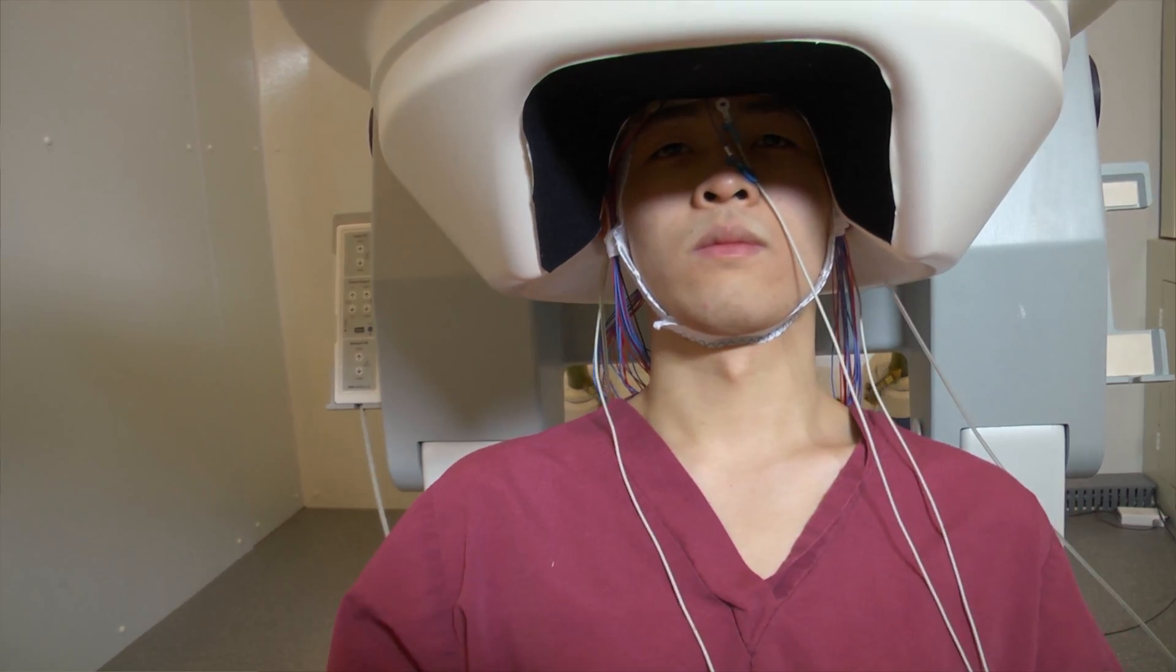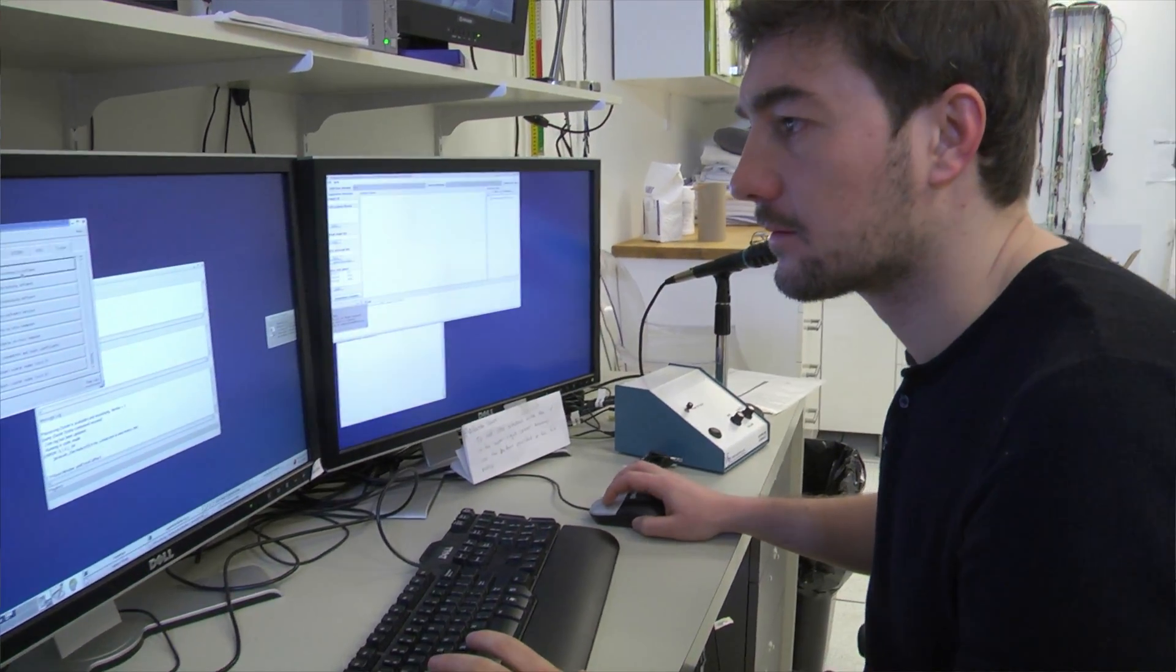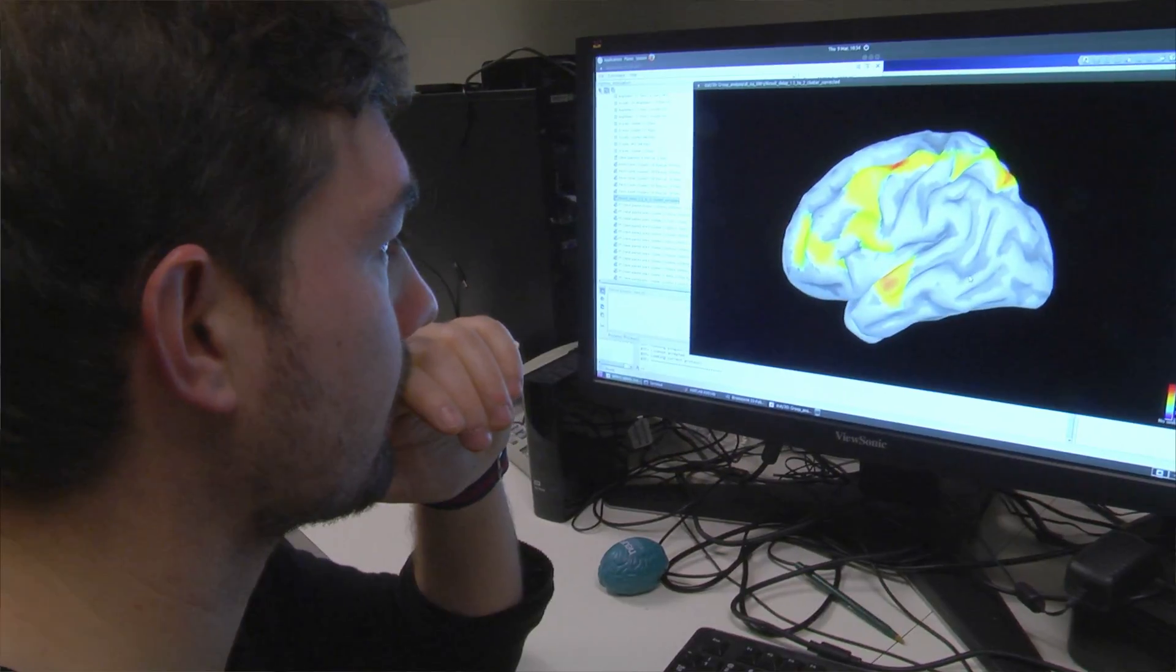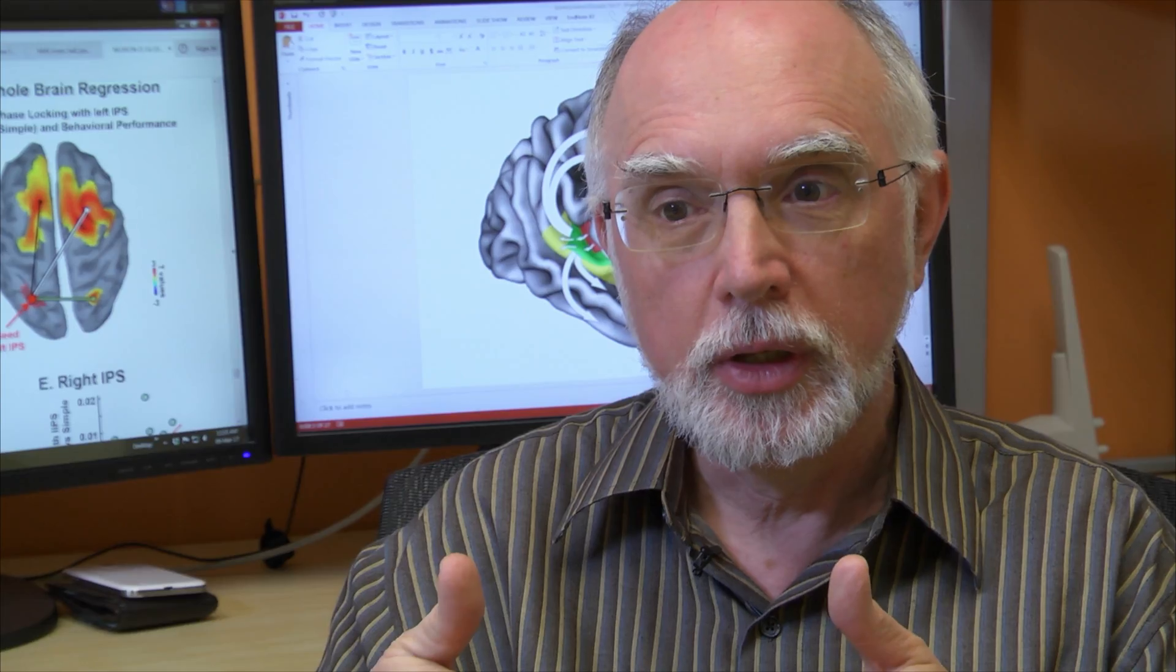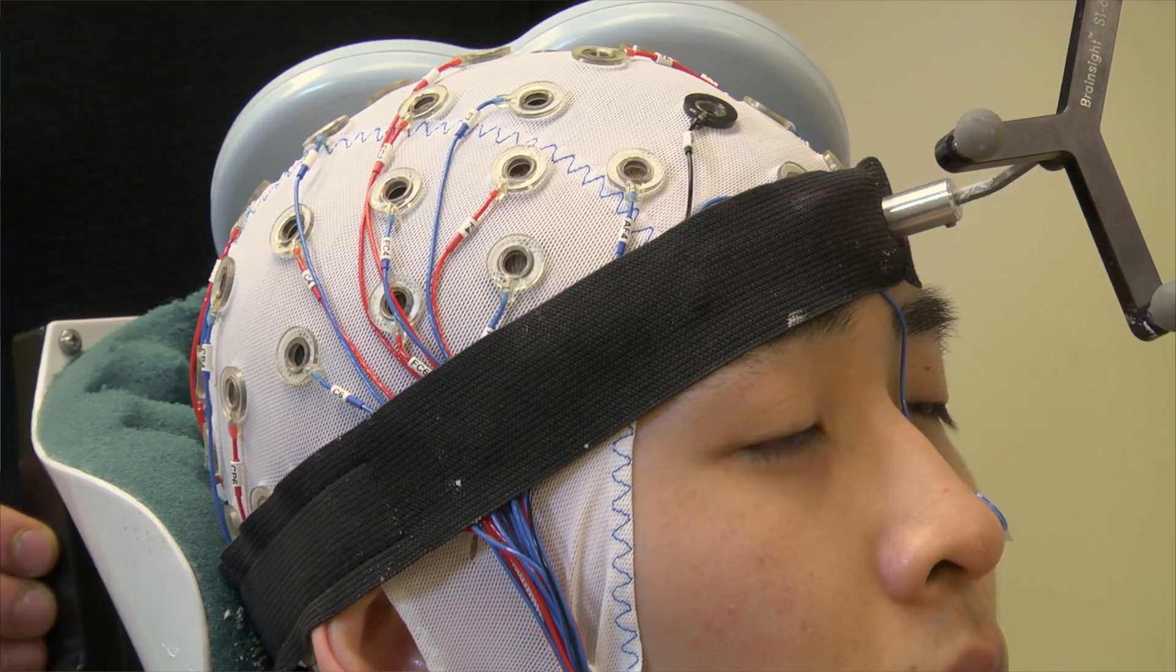The key insight here is not only that we can modulate memory circuits via stimulation, but also that we're beginning to understand how that modulation works. We demonstrated improvement in the capacity to retain auditory information for a few seconds, and we saw changes in brain oscillations that accompanied that enhanced ability. This tells us something about the underlying mechanism—how brain stimulation actually causes people to enhance their working memory capacity.